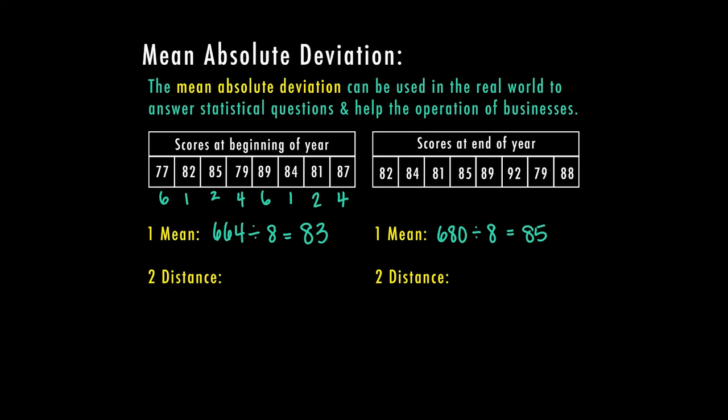This other one over here I'm going to go ahead and write them underneath again. So the distance between 82 to 85 is 3. This one is 1. This one's 4. 0, 4, 7, 6, and 3. And if I add all those up I end up with 28.